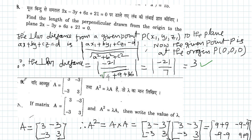...and this is equal to 3 since we are taking the absolute value we take the positive value of 3. Now let us look at the next problem which is problem number 9.